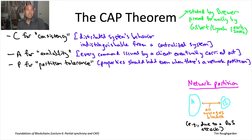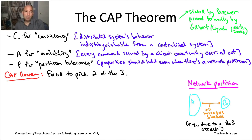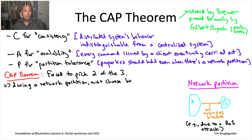Partition tolerance means you would like consistency and availability to hold even under a network partition — that is, even when you have two sets of nodes with all communication between the sets completely blocked off. All three of these are obviously desirable properties for a distributed system to have. The CAP theorem is an impossibility result which says you cannot have all three simultaneously: out of C, A, and P, you must pick only two.